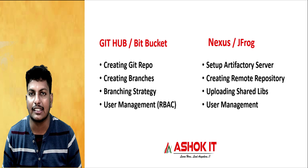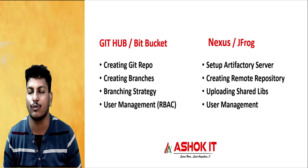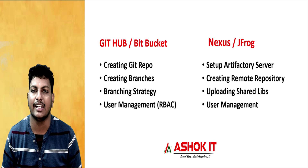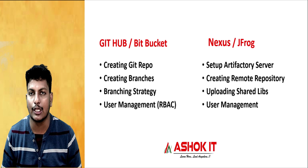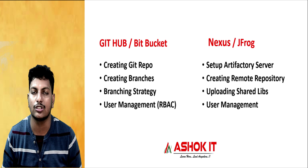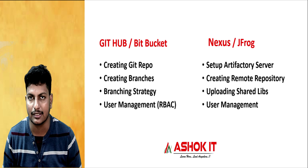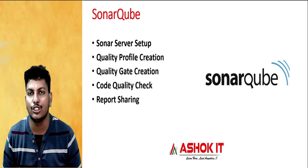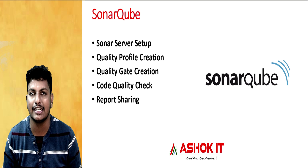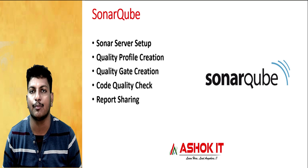And next one, Artifactory server. Project build artifacts we need to store for future reference — like Nexus repository or JFrog repository we are going to use. We need to set up that artifactory server and create remote repositories for the project to maintain shared libraries. Development team will give the shared libraries to us, and we need to upload those into the Nexus repository and provide permissions for the development team to access those repositories for their build process. And next one, SonarQube. SonarQube we are going to use to perform code review. As a DevOps engineer, we need to set up quality profiles and quality gates to perform code review for the project, check code quality, and send the code quality report to the development team.